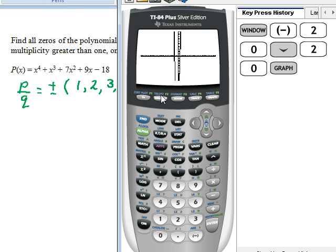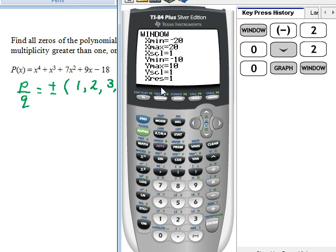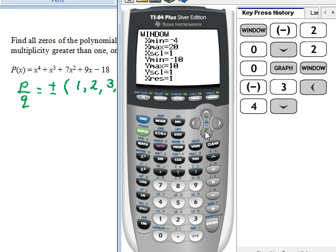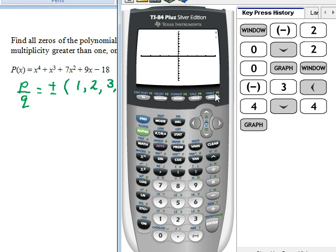But let's get a better view by going in and entering negative 4 for x min, maybe, since 3 is one of our possible zeros. So negative 4 and 4 for our x min and x max. And look at the graph again.